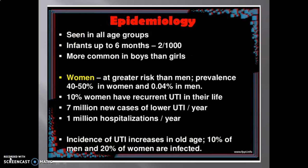The next slide covers epidemiology of UTI. It is seen in all age groups. In infants up to 6 months, it is more common in boys than girls. Women are at greater risk than men, with prevalence of 40–50% in women and 0.04% in men. 10% of women have recurrent UTI in their lifetime. There are 7 million new cases of lower UTI per year and 1 million hospitalizations per year. Incidence increases in old age — 10% of men and 20% of women are infected.